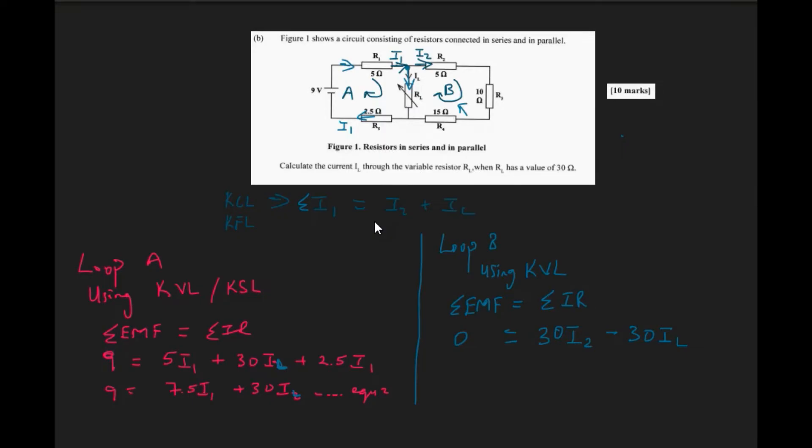To continue, we would go straight into talking about the sum of the EMF in that loop, Loop B, is equal to the sum of the potential drop across each of the components. Now across R2, R3, R4, it's the same current that will be flowing.